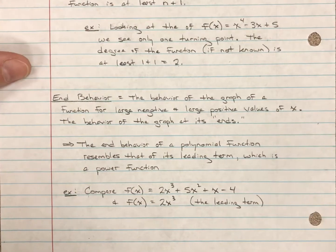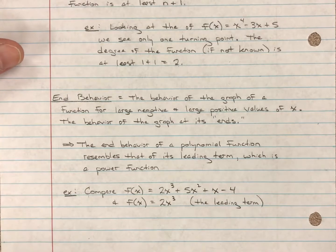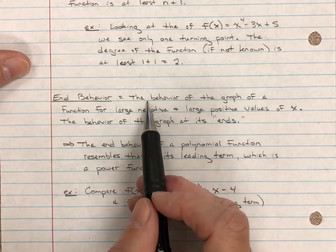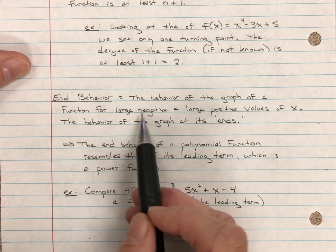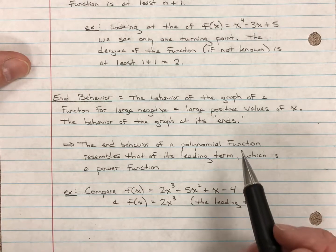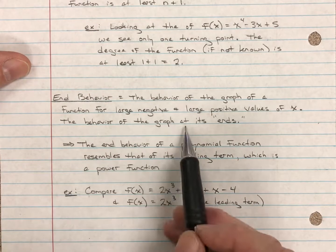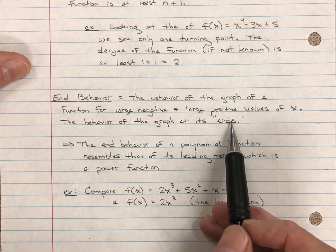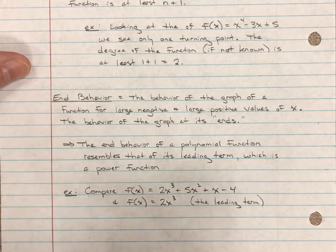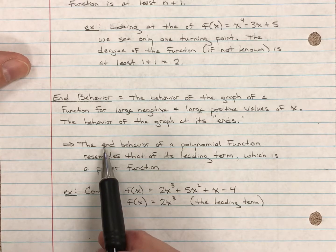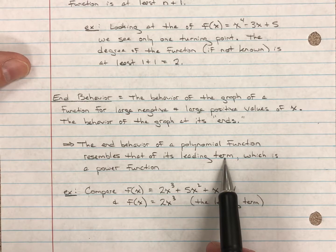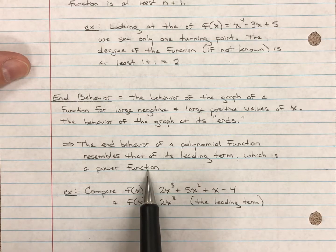Last but not least, let's talk about the end behavior of the graph of a polynomial. The end behavior is the behavior of the graph of a function for large negative and large positive values of x. We're looking at the behavior at the graph's ends — not what's happening in the middle with turns. The end behavior of a polynomial function resembles that of its leading term, which is a power function, as we saw in a previous video lecture.